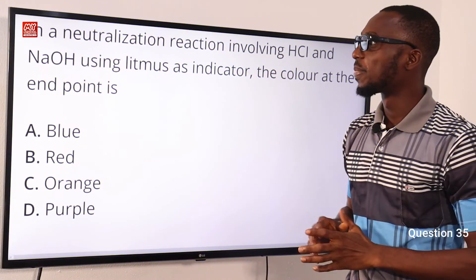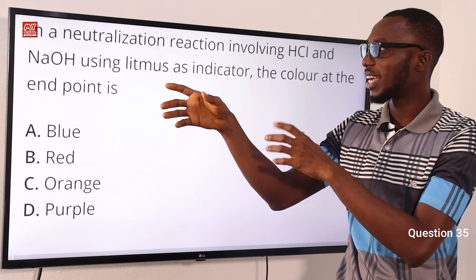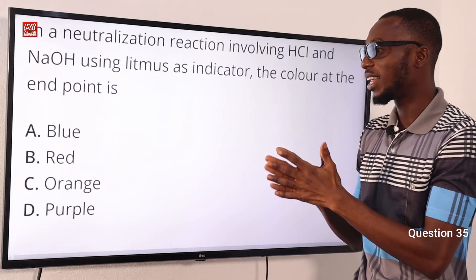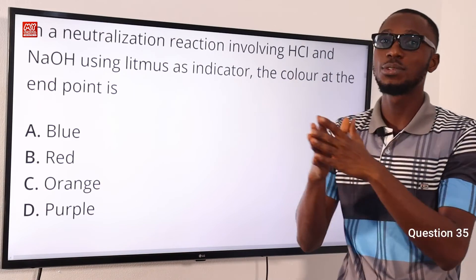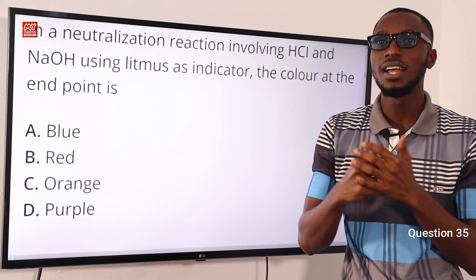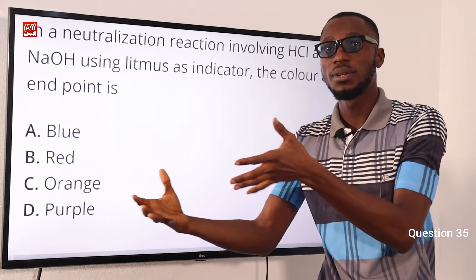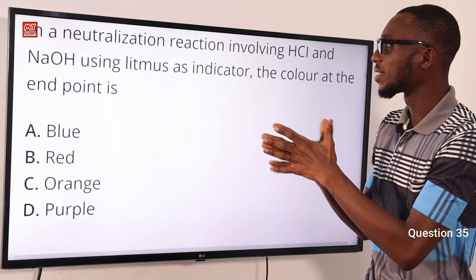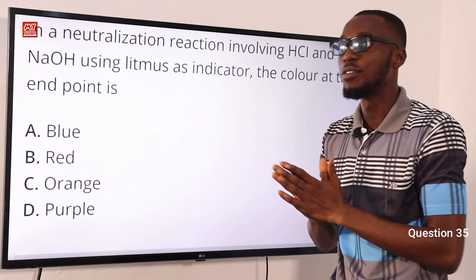Question 35. In a neutralization reaction involving HCl (hydrogen chloride) and sodium hydroxide using litmus as indicator, the color at the end point is what? The color at the end point is purple. This neutralization reaction gives you salt and water only. When NaCl gets dissolved in water, it hydrolyzes to give equal amounts of hydrogen ion and hydroxide ion, giving you a neutral solution. So using litmus as indicator, the color change at the end point is option D — purple.